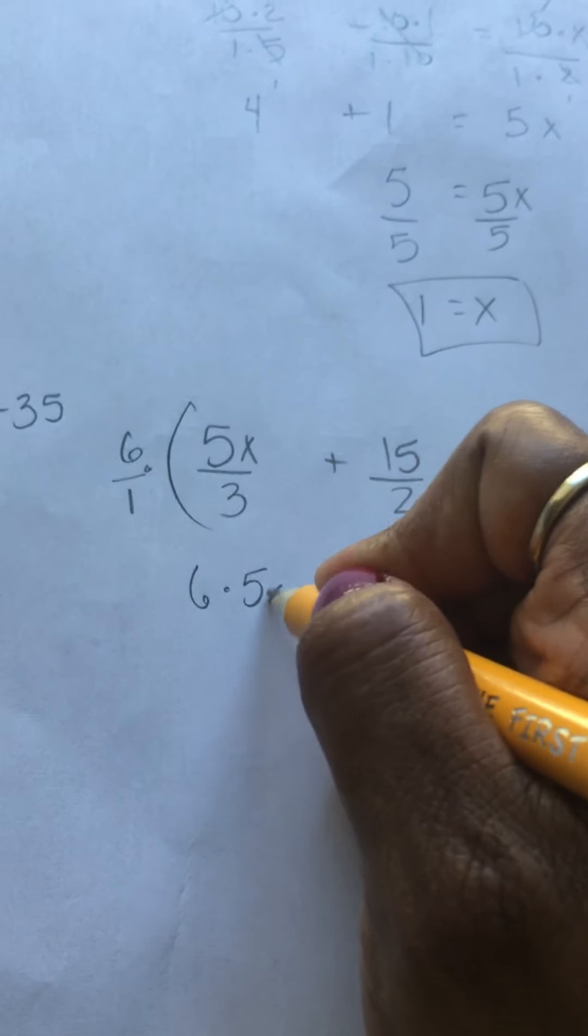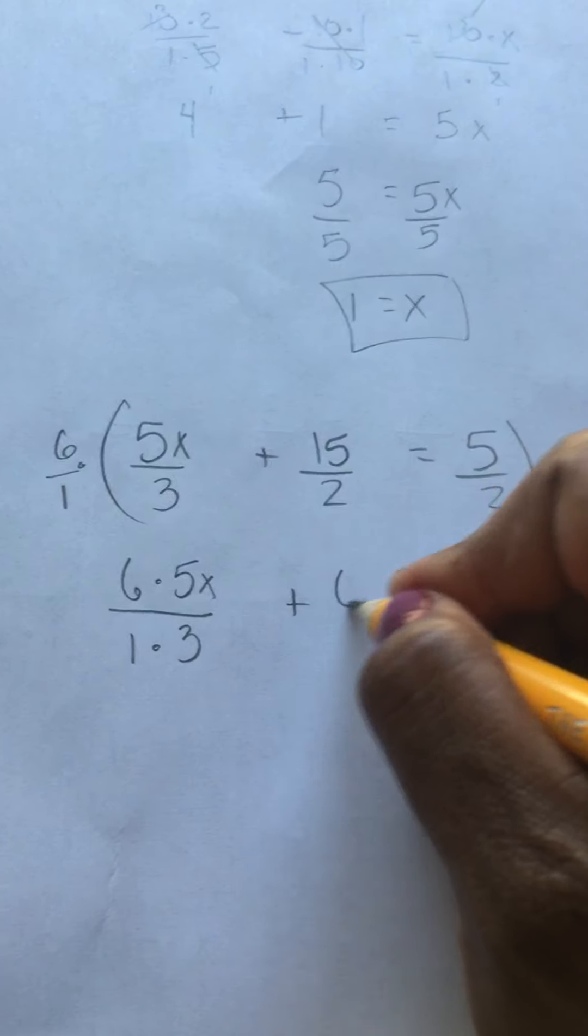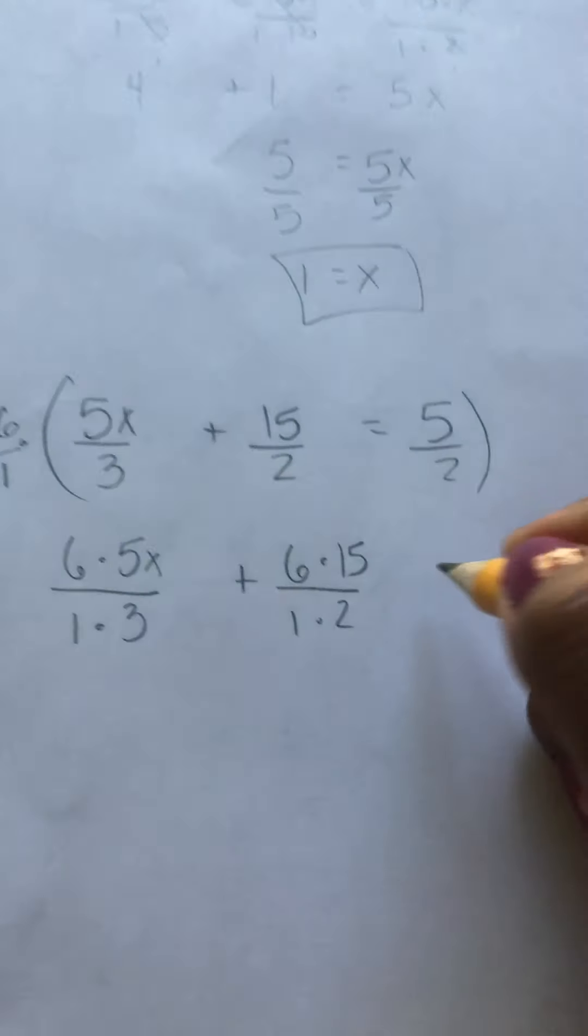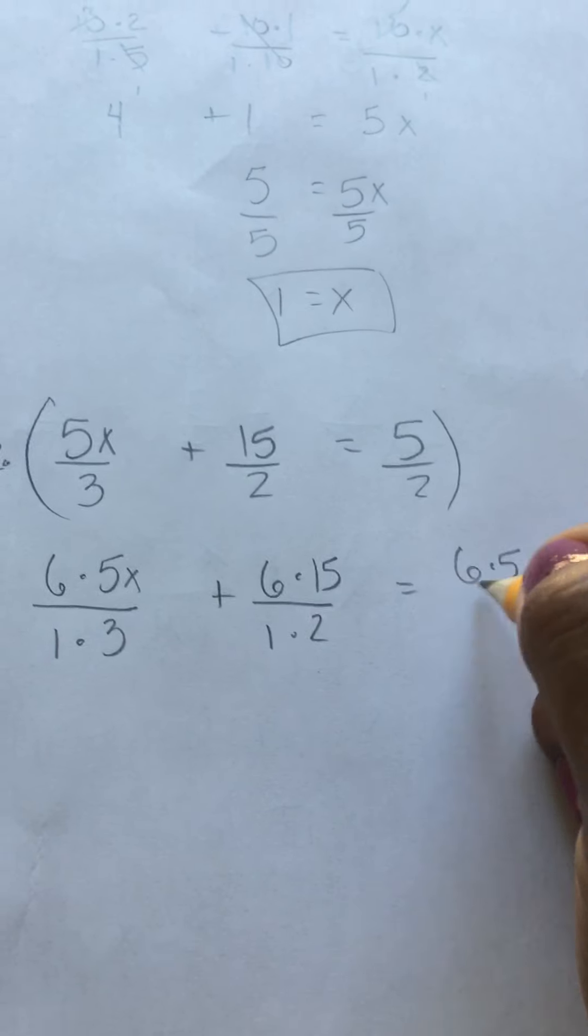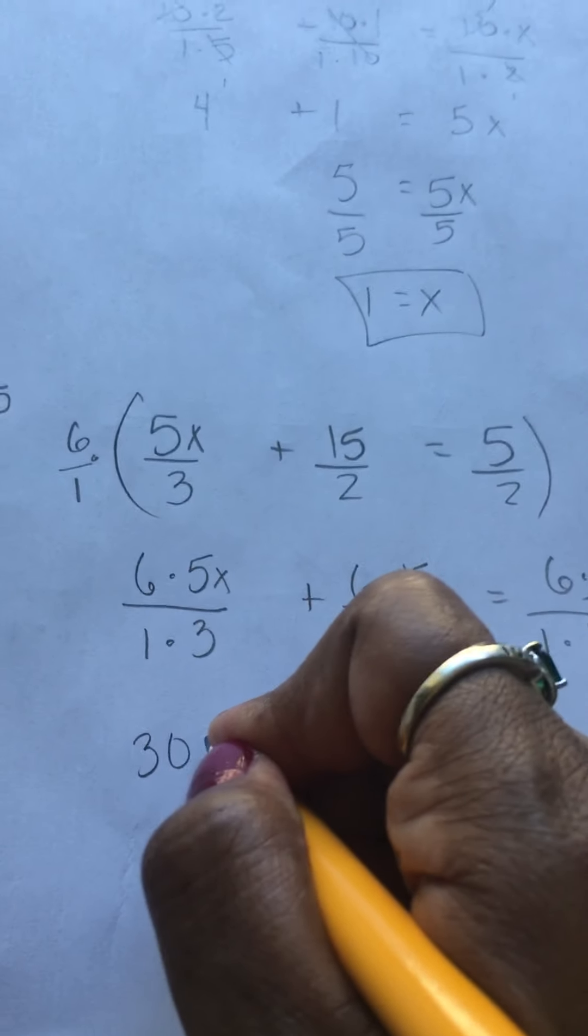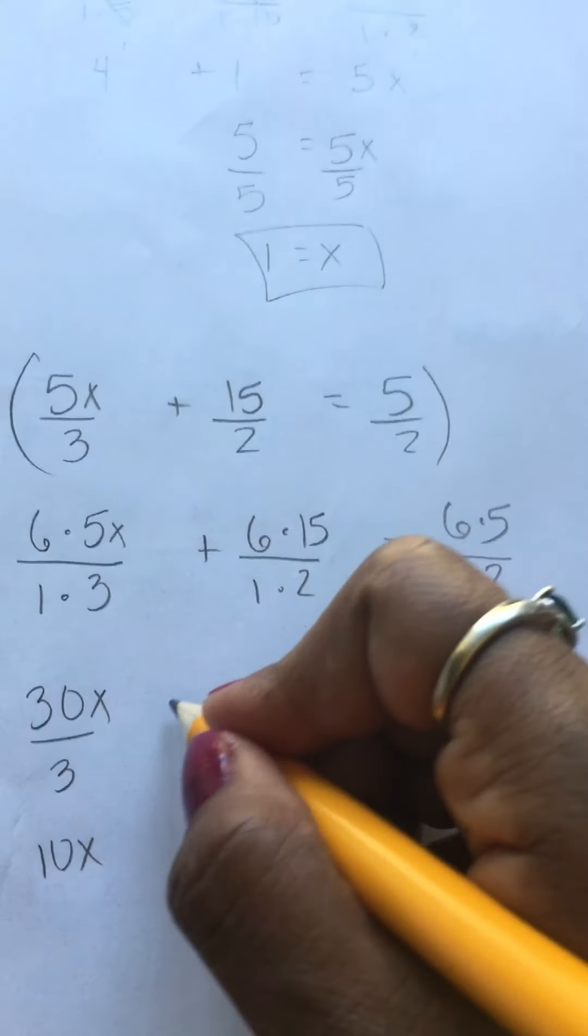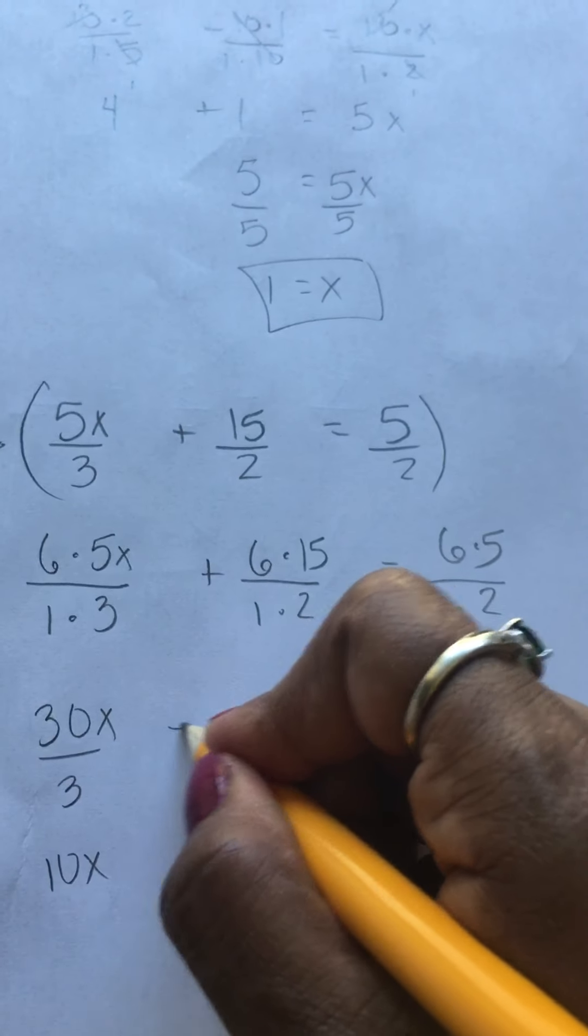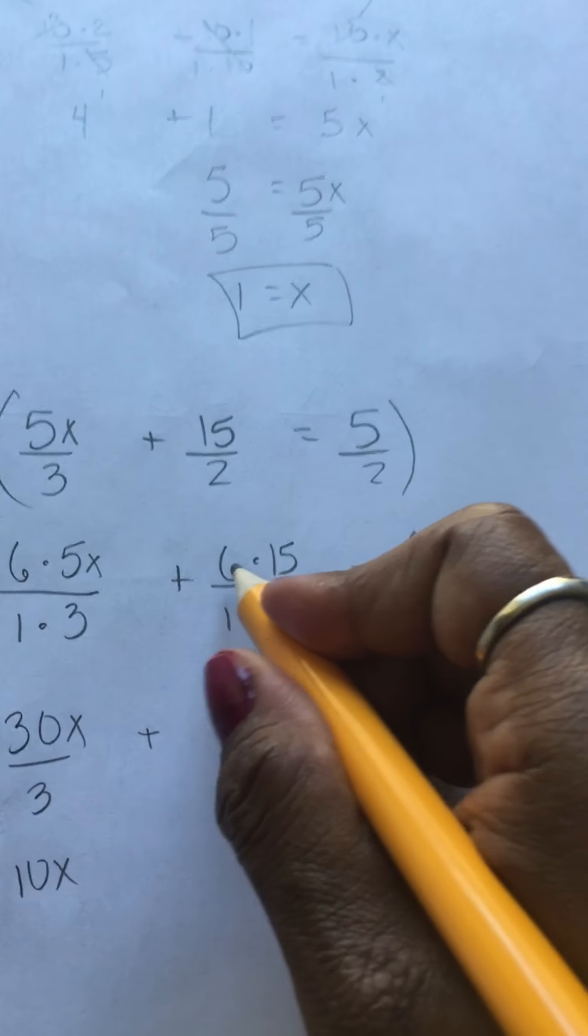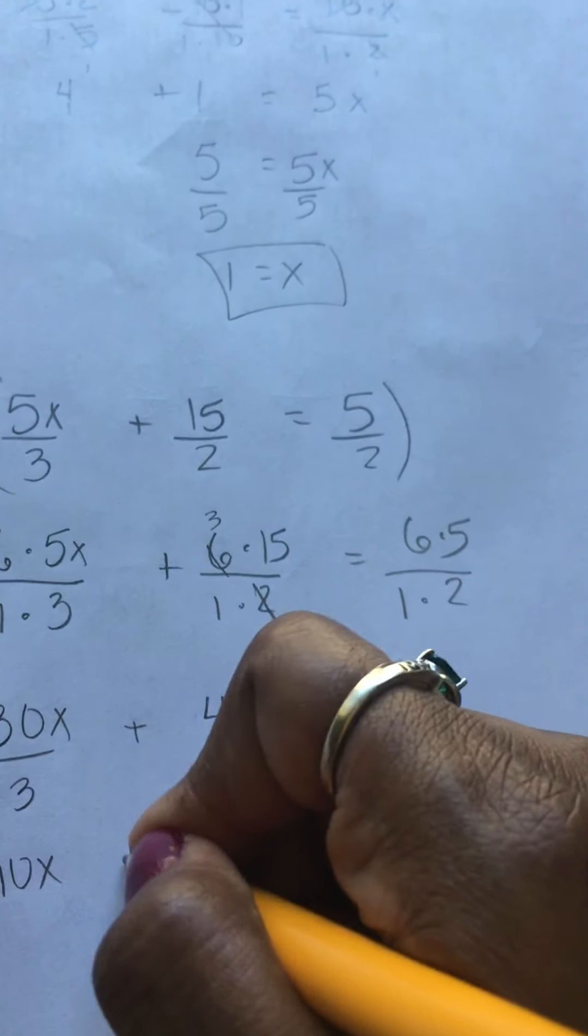So we have 6 times 5x over 1 times 3 plus 6 times 15 over 1 times 2 equals 6 times 5 over 1 times 2. That is 30x over 3, I don't know why I did that to myself, 10x. Do I really want to do that that way? 6 times 15 is 90? Or you could just do it this way. What's 6 divided by 2? 3. 3 times 15 is 45.